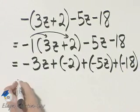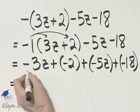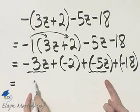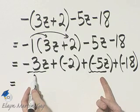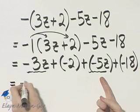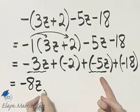Let's continue by combining any like terms. Here I have a term containing z, and here the same thing, so those two terms are like terms. What is negative 3z plus negative 5z? Well, negative 3 plus negative 5 is negative 8, so it's negative 8z.